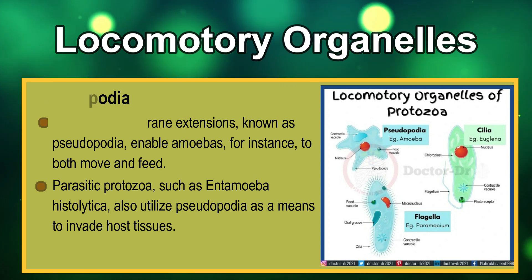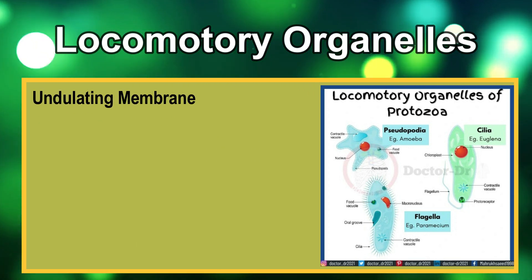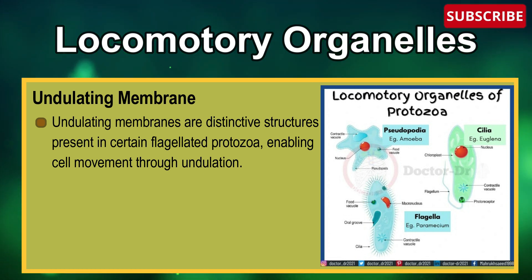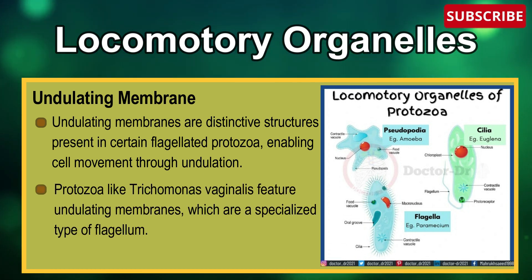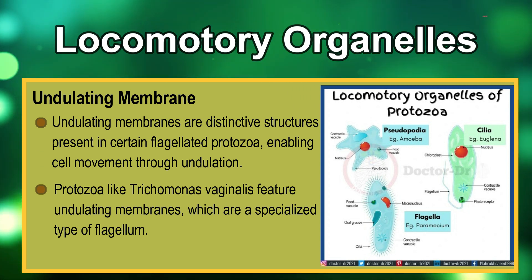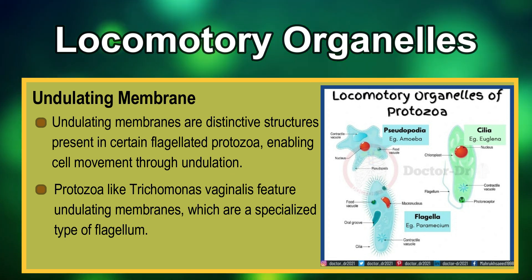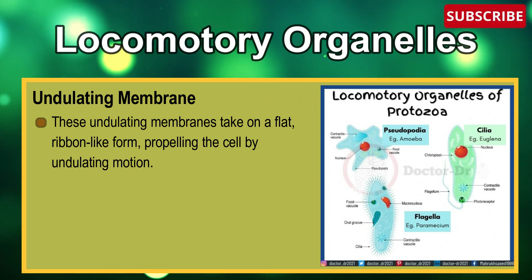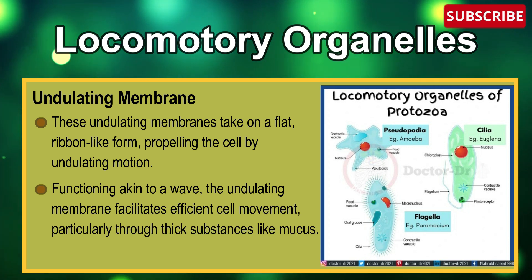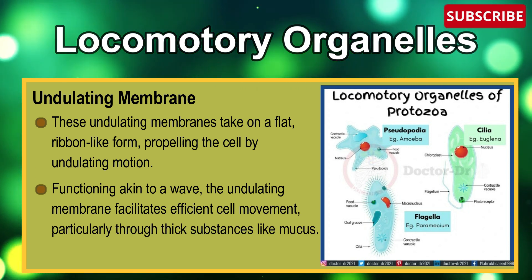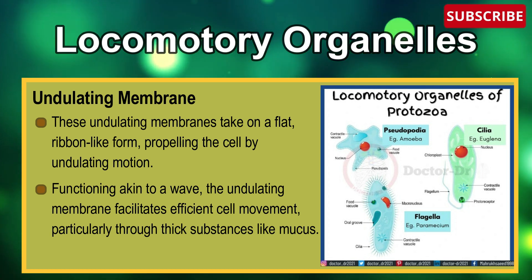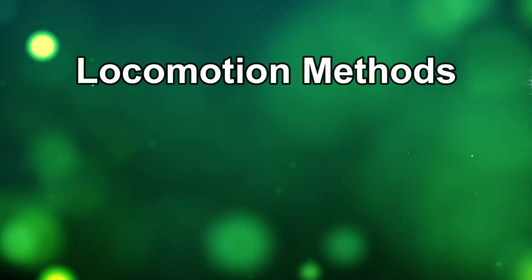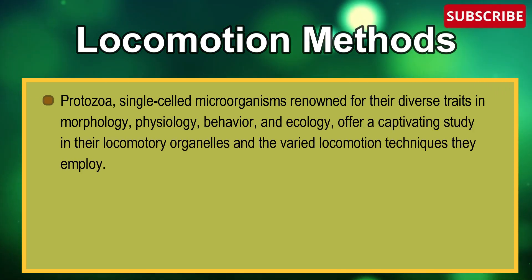Parasitic protozoa such as Entamoeba histolytica also utilize pseudopodia as a means to invade host tissues. Lastly, undulating membranes are distinctive structures present in certain flagellated protozoa, enabling self-movement through undulation. Protozoa like Trichomonas vaginalis feature undulating membranes, which are a specialized type of flagellum. These undulating membranes take on a flat, ribbon-like form, propelling the cell by undulating motion, functioning akin to a wave, facilitating efficient cell movement particularly through thick substances like mucus.